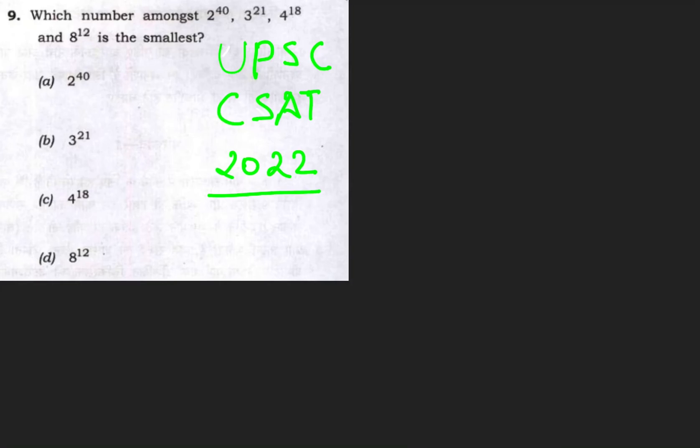Hello everyone, welcome to Optimize IAS. We are doing the quantitative portion from CSET 2022 paper every day. Here is the question: which among the following numbers is the smallest - 2^40, 3^21, 4^18, and 8^12?